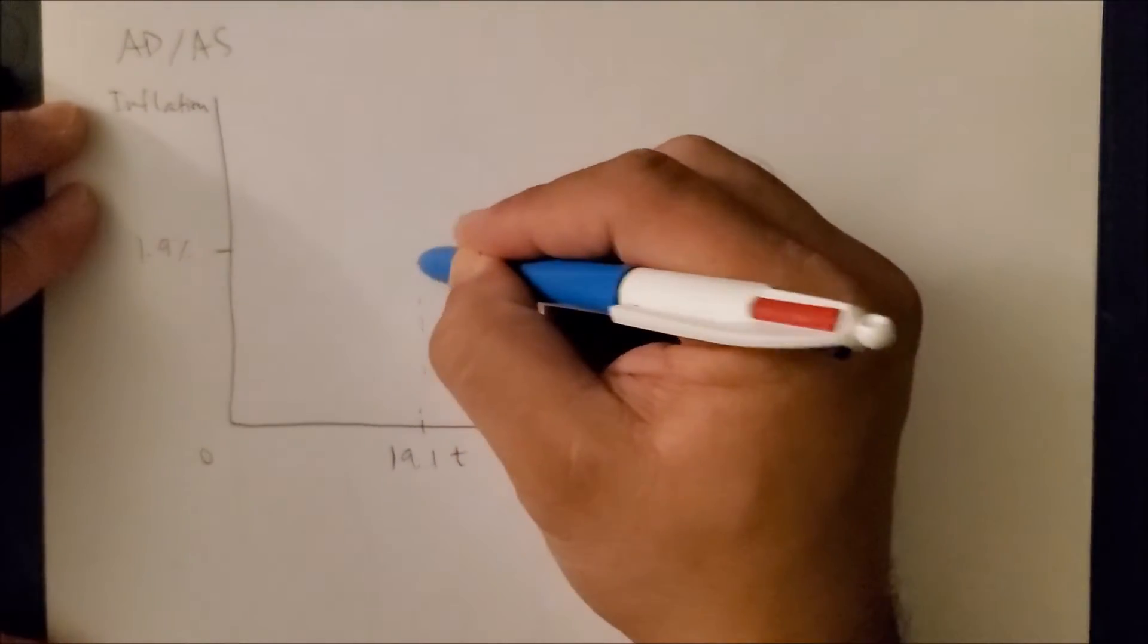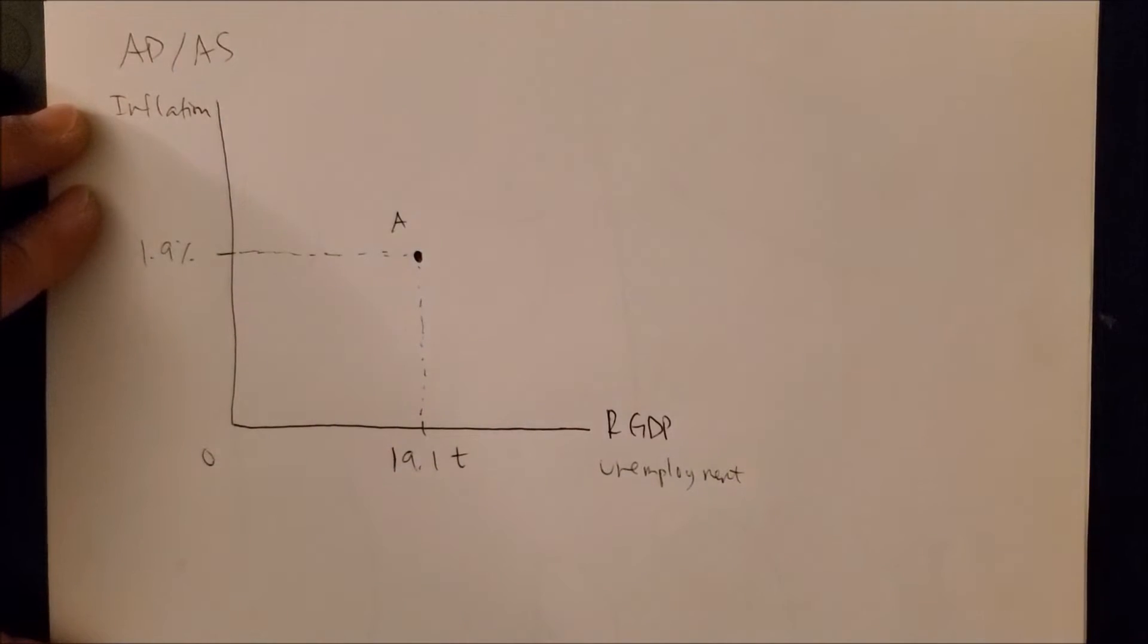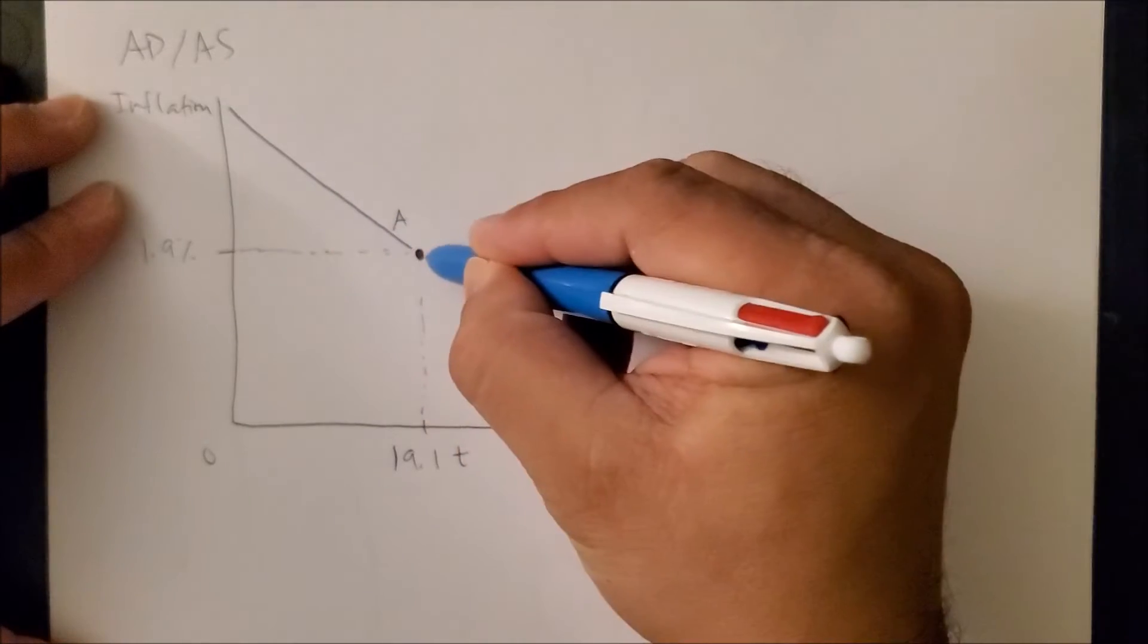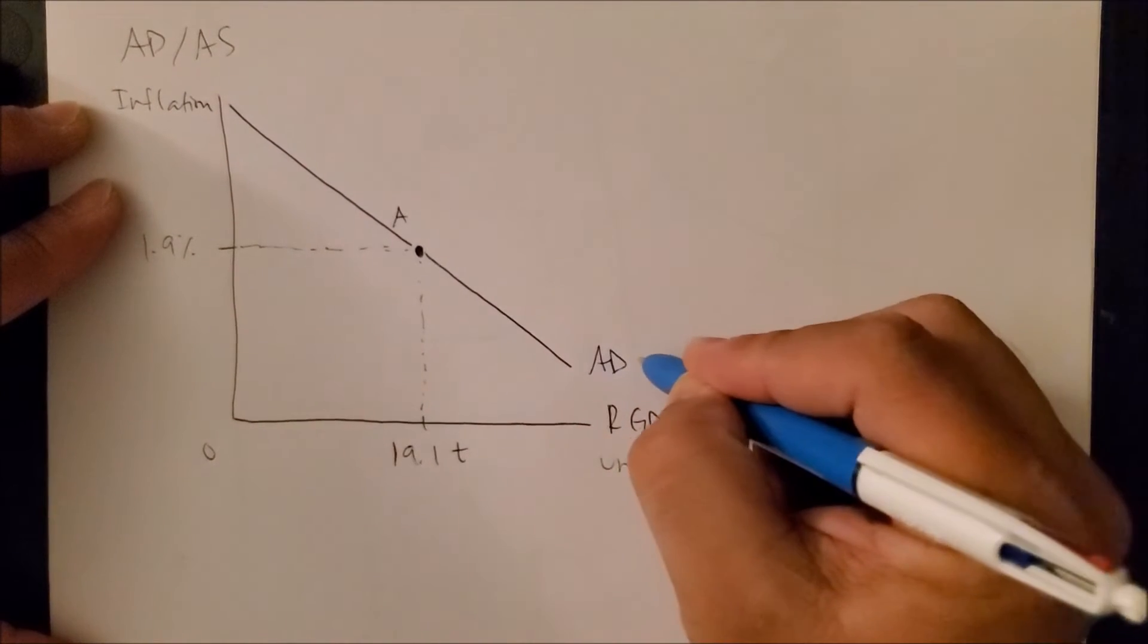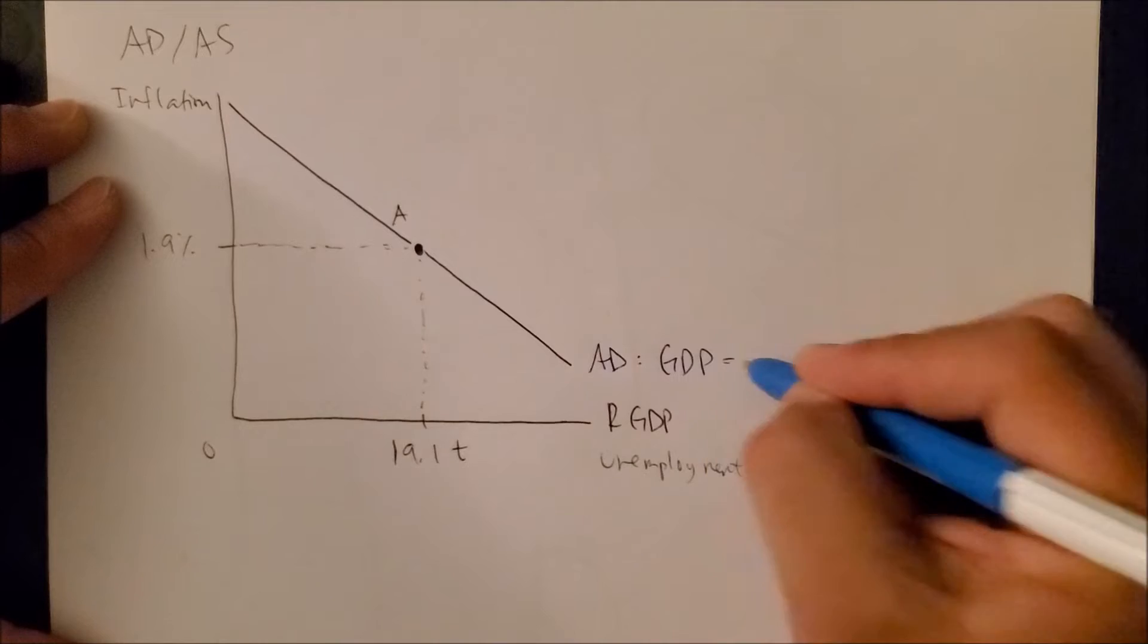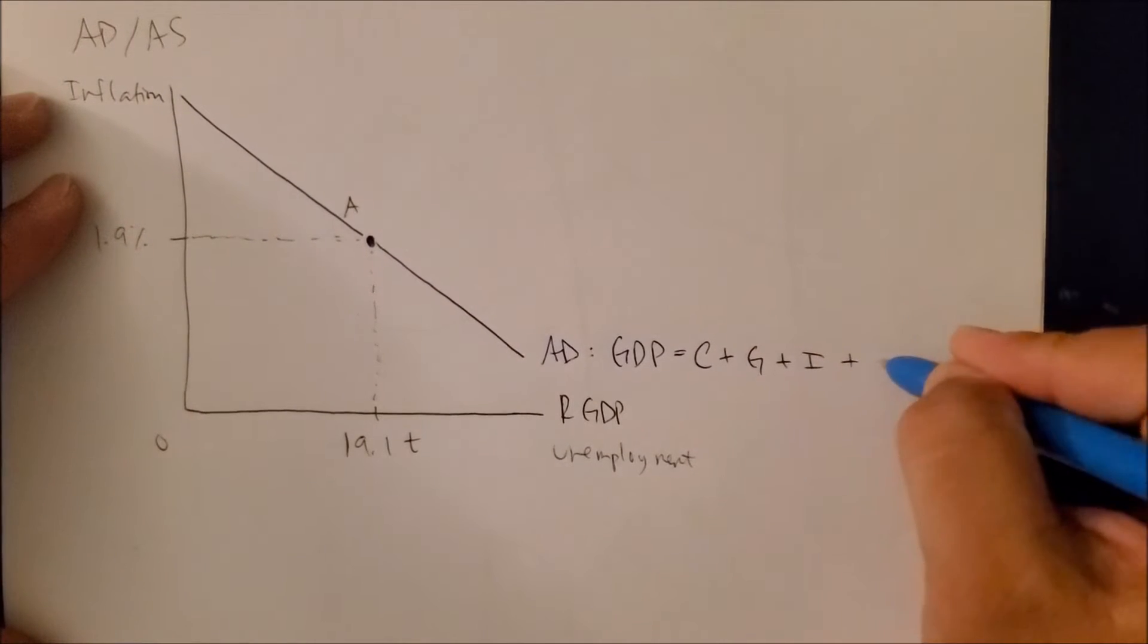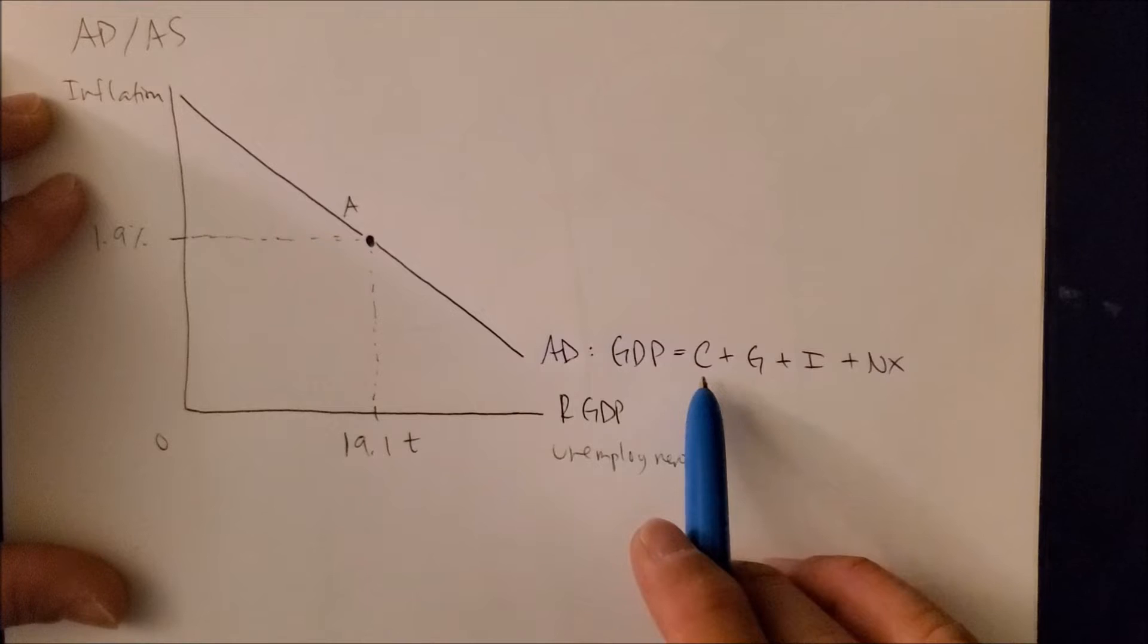I'm going to use a blue pen to represent the AD curve, and we know that it is a downward sloping curve that looks like that. We can label this curve as AD, and AD again is a function of GDP where GDP consists of consumers (you and me), government spending, investment spending, and net exports.